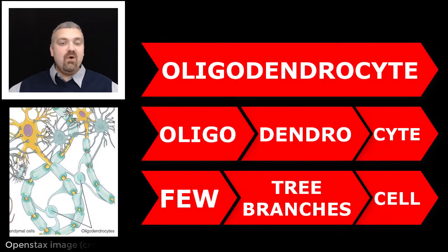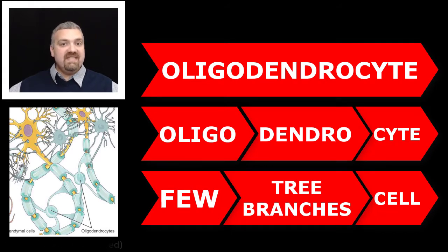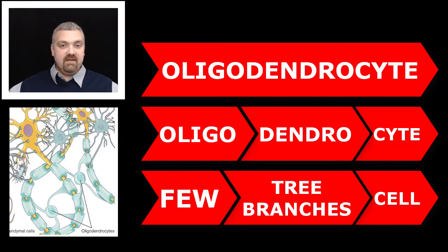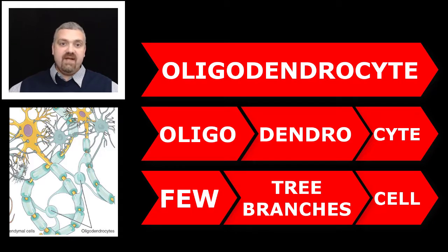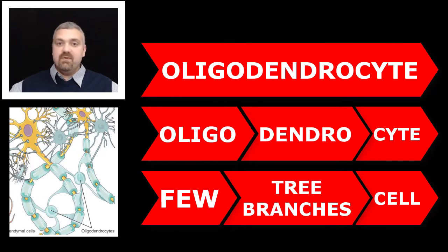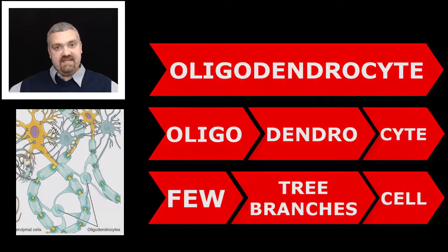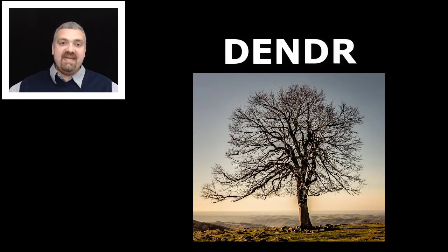Another example is the oligodendrocyte. Site means cell, oligo means few — so this is a cell with a few branches. The oligodendrocyte is one of your glial cells, covered in a later video. It wraps these branches around your neurons, and that's how it myelinates nerves — covering them with a fatty insulation that allows them to send their signals much, much faster. Those are examples of dender meaning tree.